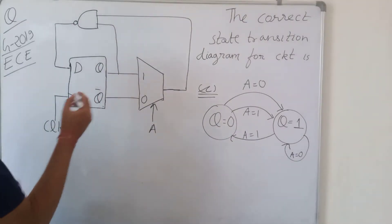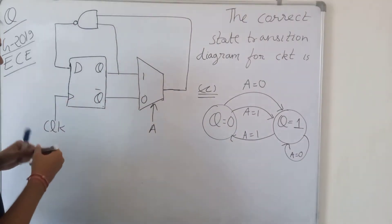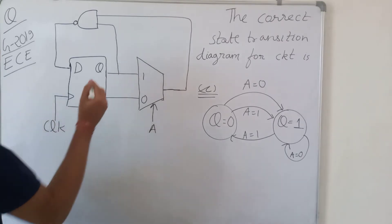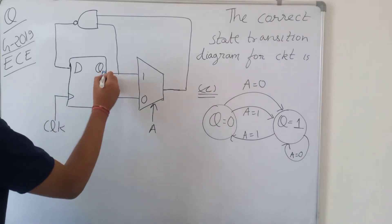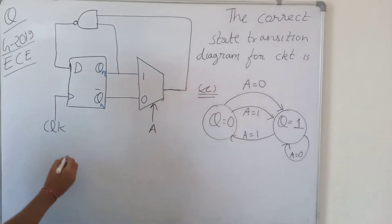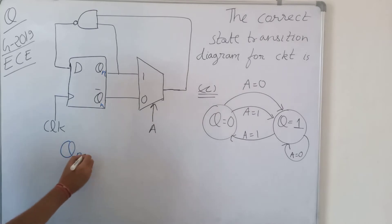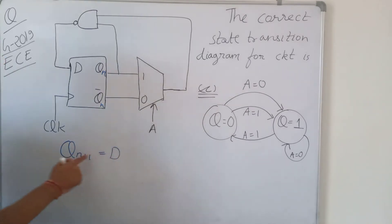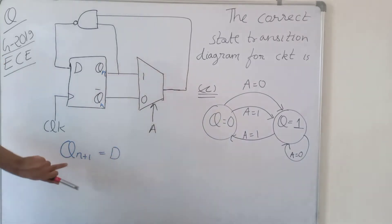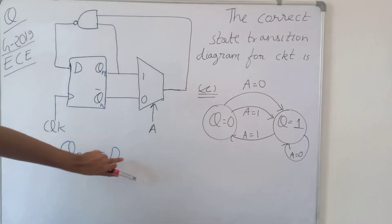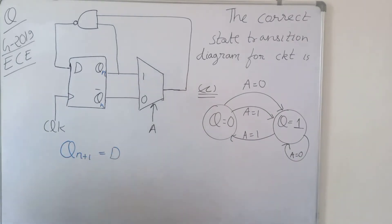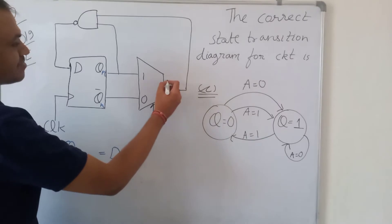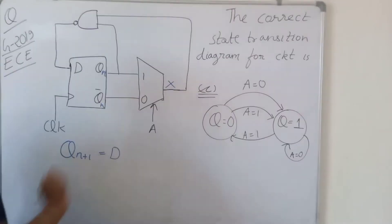First, this is the D flip-flop. Let the output be Qn, so the complemented output is Qn̄. The next state of the D flip-flop, Qn+1, should be equal to D — the next state equals the input D.